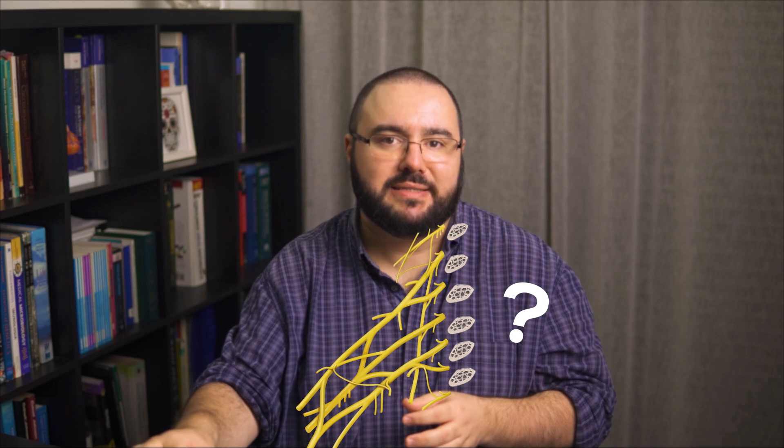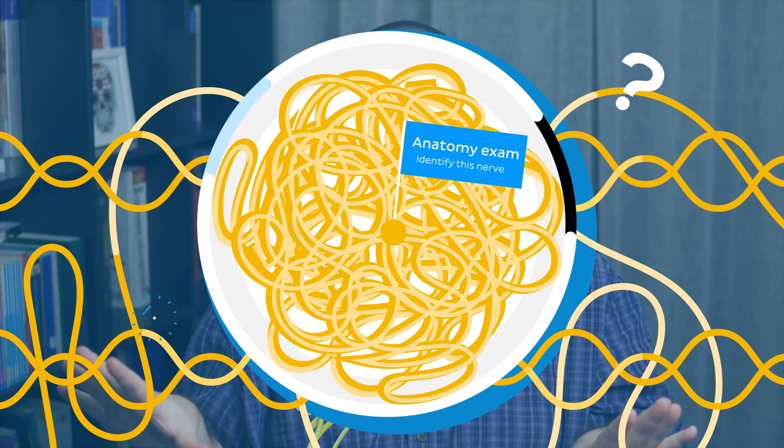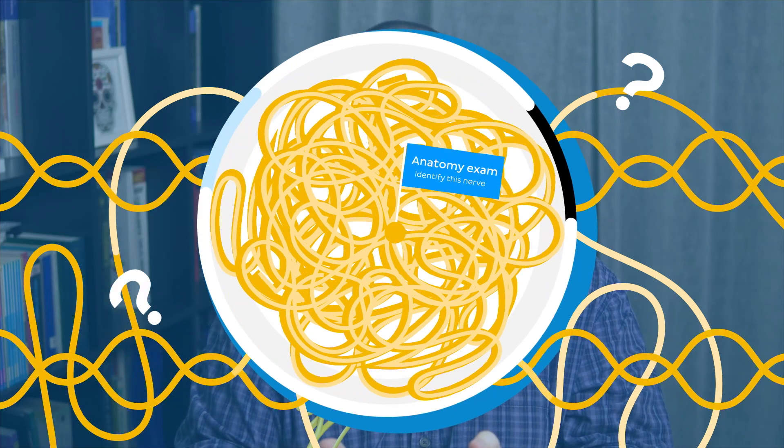Now every time you look at an image of a brachial plexus, you probably feel like running out of the room. And when your anatomy instructor points at a nerve in the brachial plexus and asks you to identify it, all you can see is a bowl of spaghetti sitting in front of you.